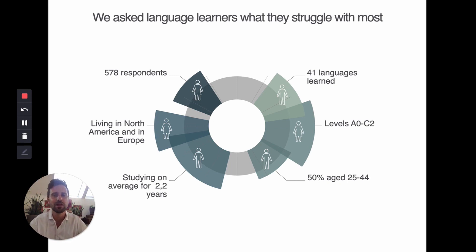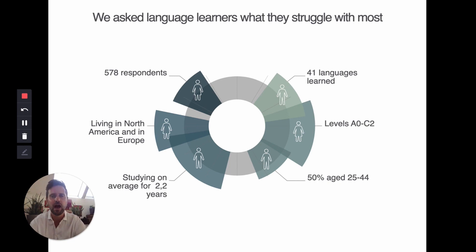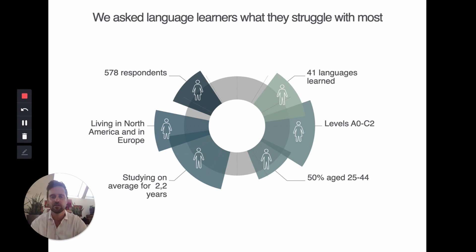Many of the things we found really surprised us. We didn't start with strong assumptions — we really wanted to get feedback from language learners and understand how we can help them. We interviewed 578 respondents through an online questionnaire and then conducted qualitative interviews with a subsample of 20 of them. The learners had been studying 41 languages, from beginner to C2 fluency.